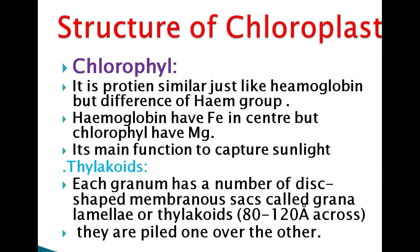Chlorophyll is a protein similar to hemoglobin, but with a key difference in the central atom. Hemoglobin has iron at its center, whereas chlorophyll has magnesium. Due to this structural difference, the functions of the two proteins are different: hemoglobin carries oxygen, while chlorophyll captures light.